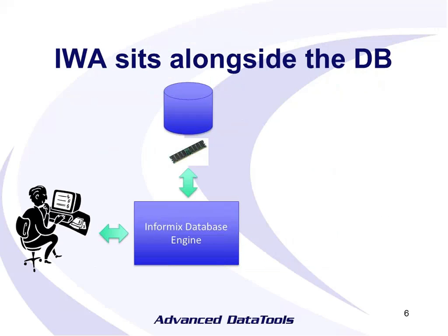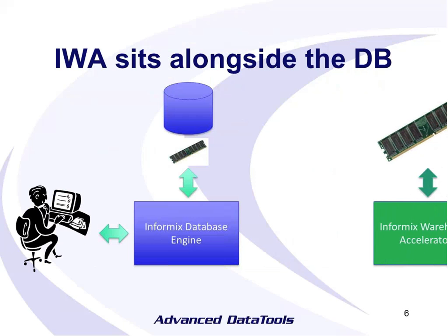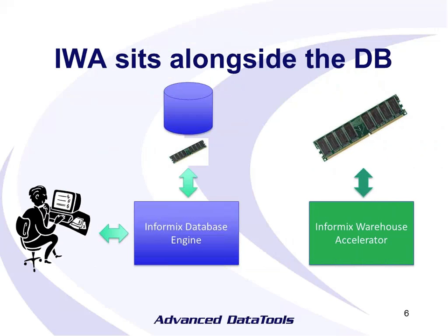Just to put the accelerator — IWA — in context: this is the way most systems are right now. You've got your Informix database, most of your data sits on disk, there's a little bit of memory used for caching your buffer pool. Every time you submit a query, it goes to see if the results can be satisfied from your buffer; if not, it goes to disk. The accelerator sits alongside the database and doesn't really use disk — all of the data is stored in memory. We normally give it quite a bit of memory, and of course memory being much faster than disk is where we get a lot of our performance increases.